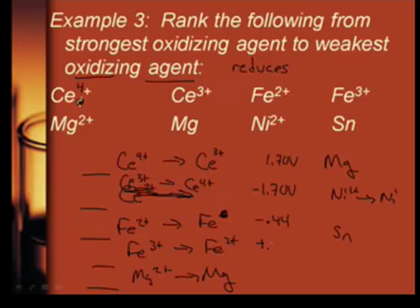How about magnesium? Magnesium 2 plus down to elemental is negative 2.73. And actually, this one will be positive 2.73. Nickel 2 to nickel. Nickel 2 to nothing is negative 0.23, not 2.3. And then tin. Tin plus 2 down to elemental is negative 0.14. So this will be positive 0.14 if we're going elemental to something else.